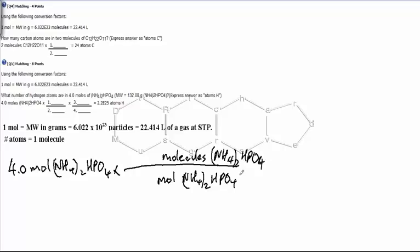And we need now to find a relationship between molecules of NH42HPO4 and moles of NH42HPO4. And we get that from up here, we can see that 1 mole is equal to this many molecules, 6.022 times 10 to the 23rd.